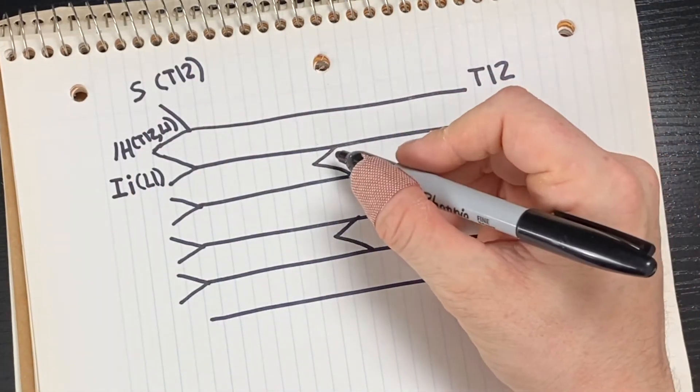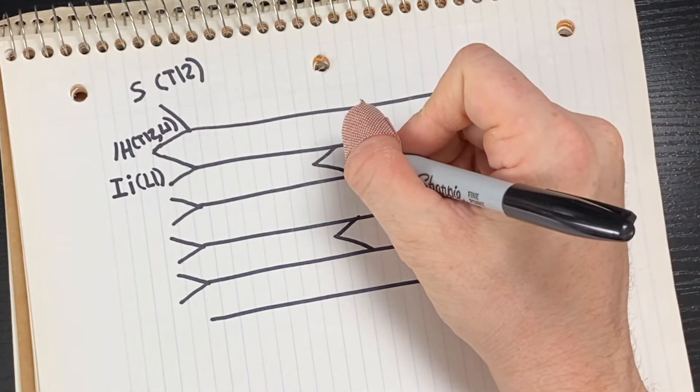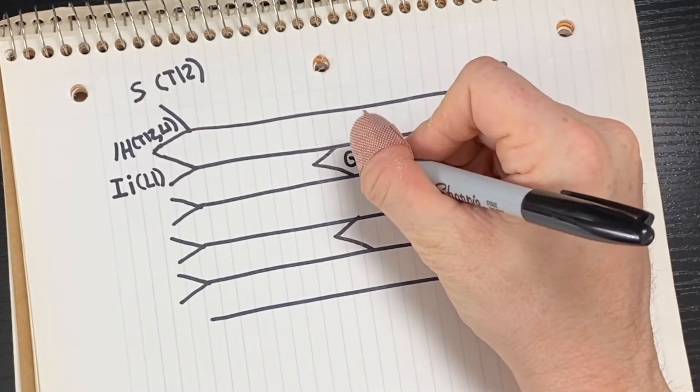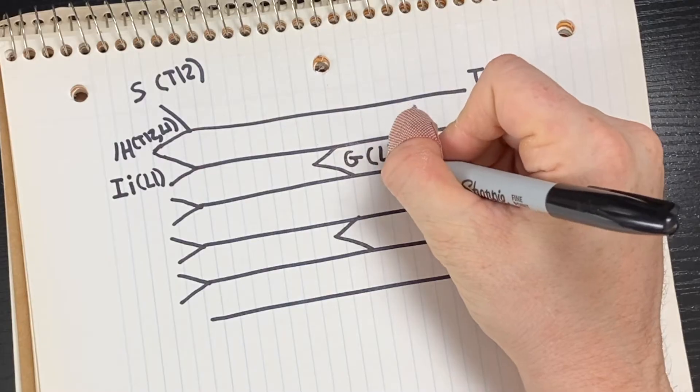Then directly to the right of that is going to be the genitofemoral nerve, and we know that this one is going to get branches from L1 and L2, so we put that in parentheses right next to it.